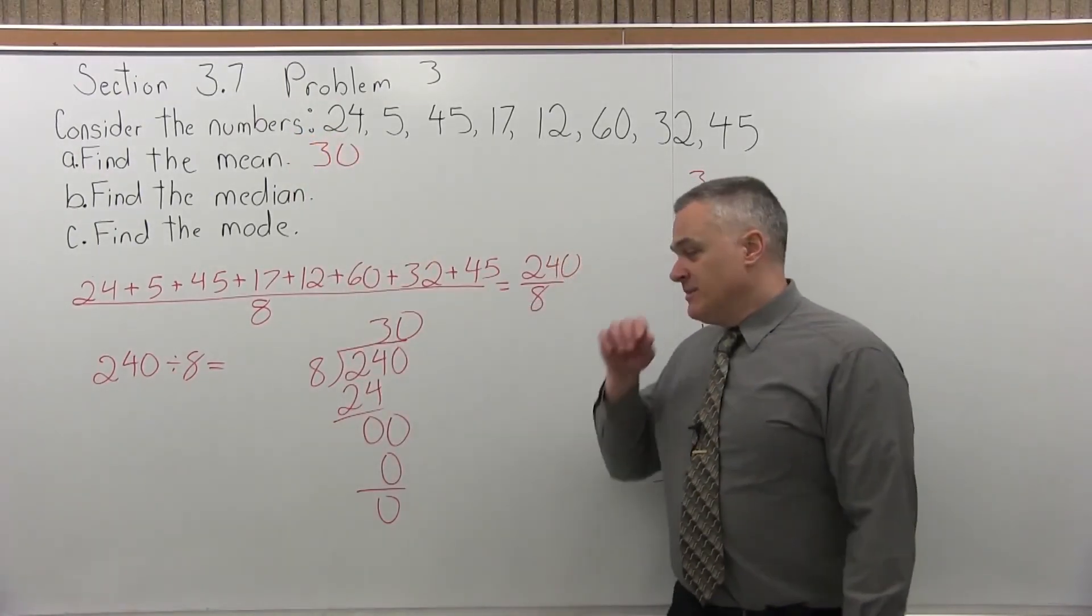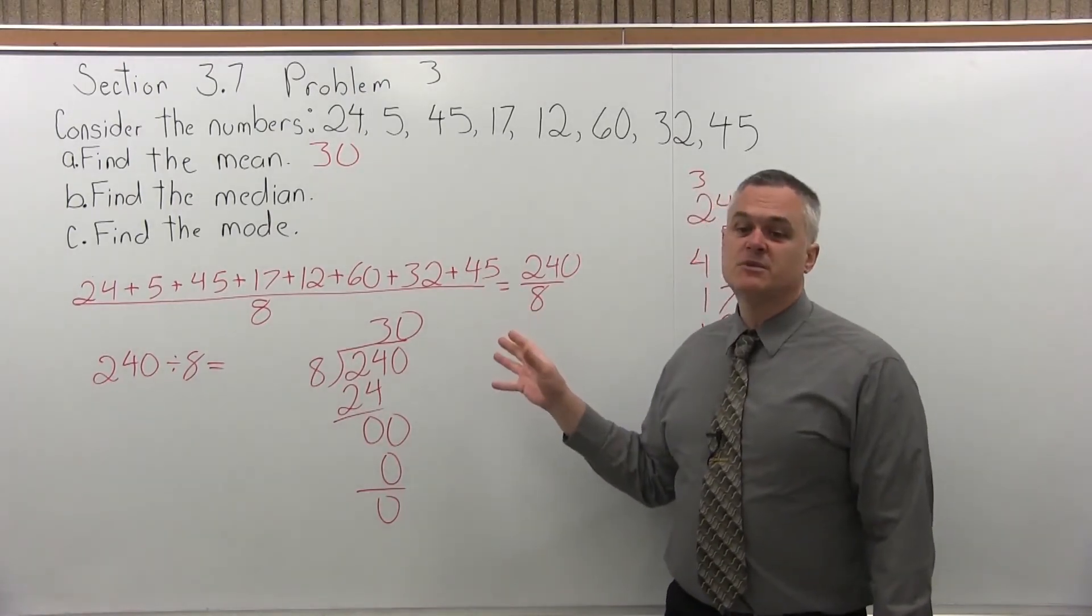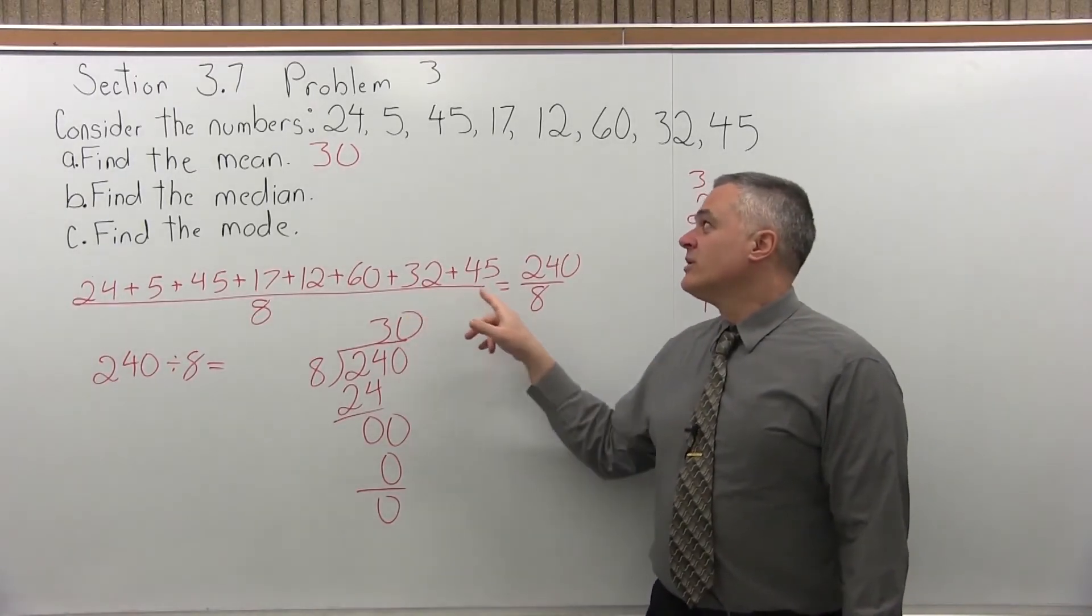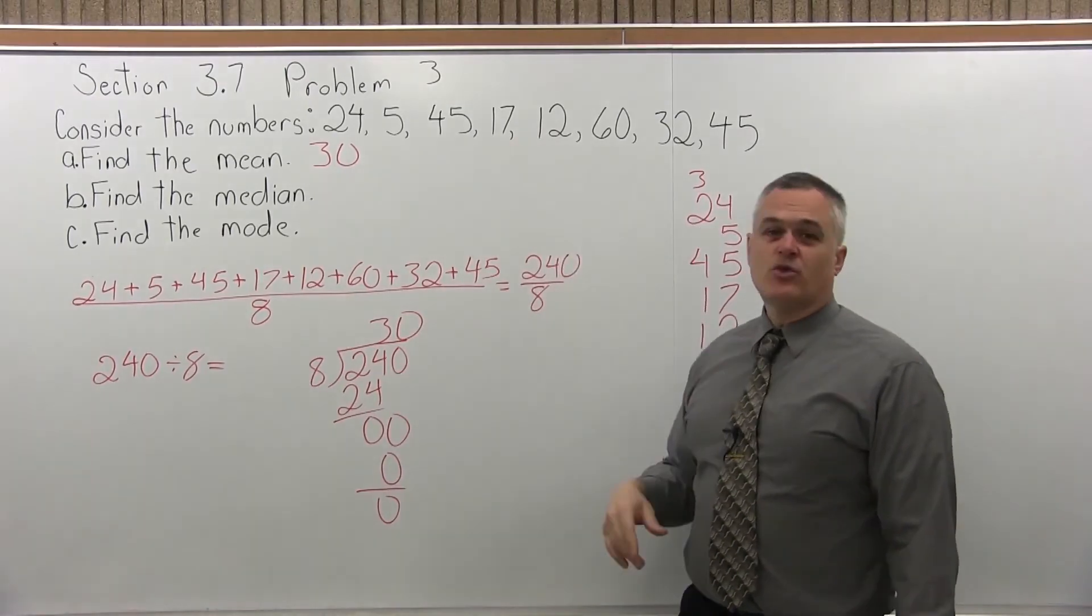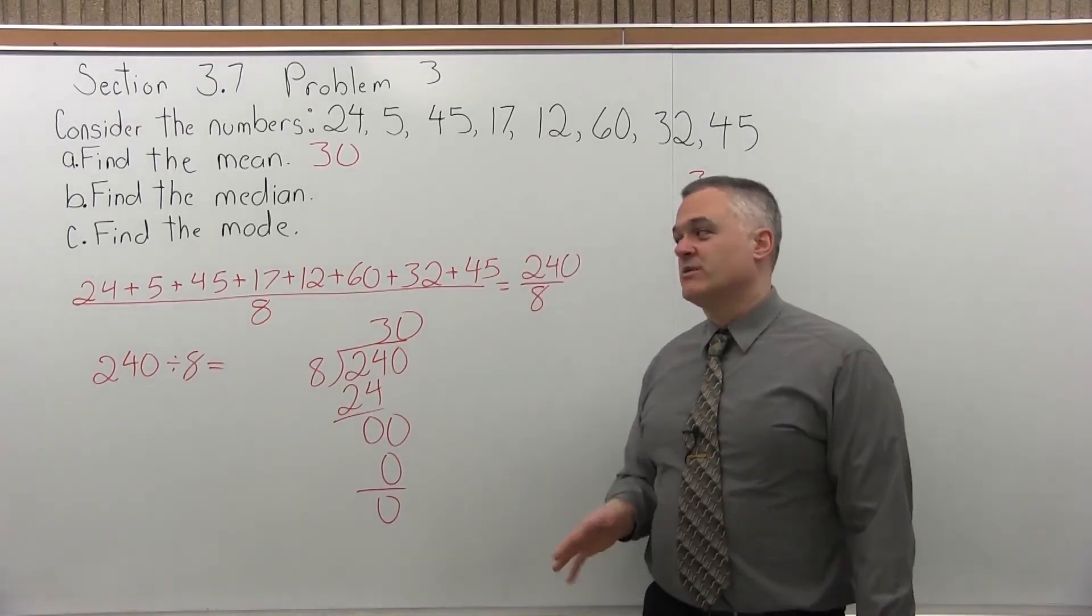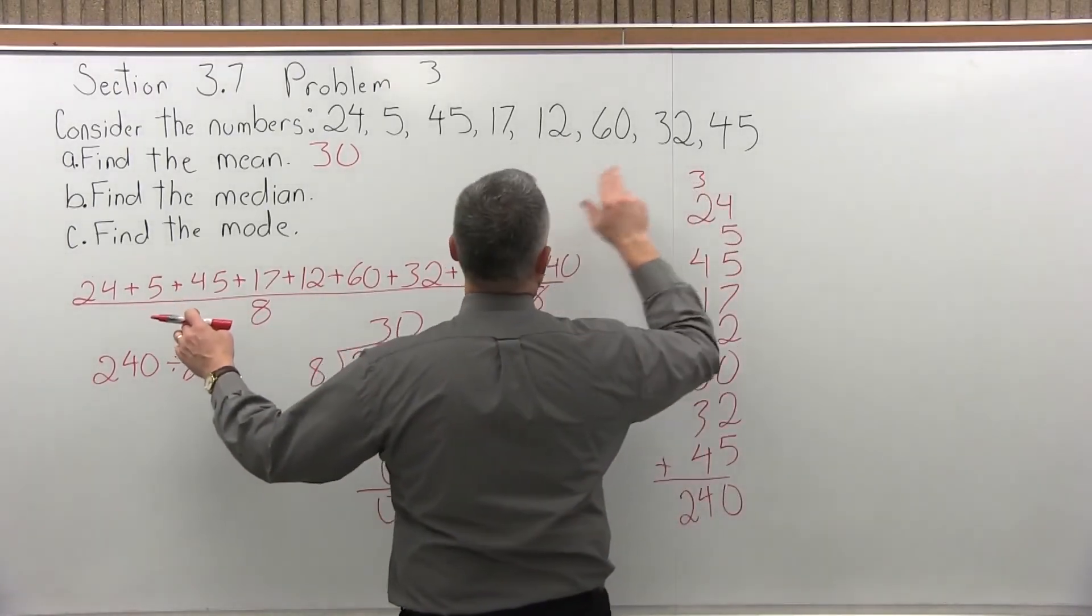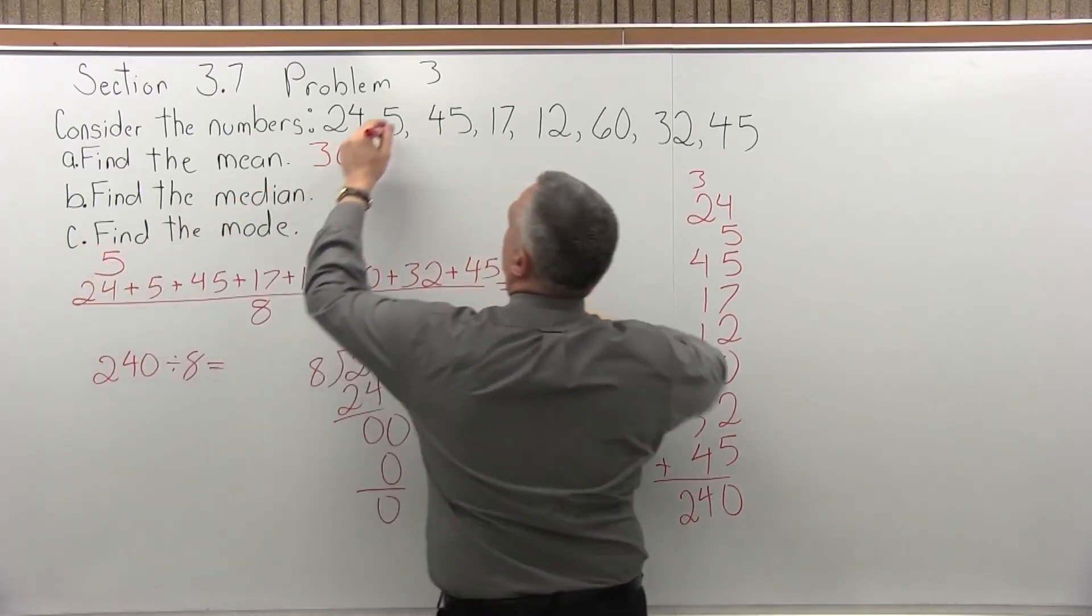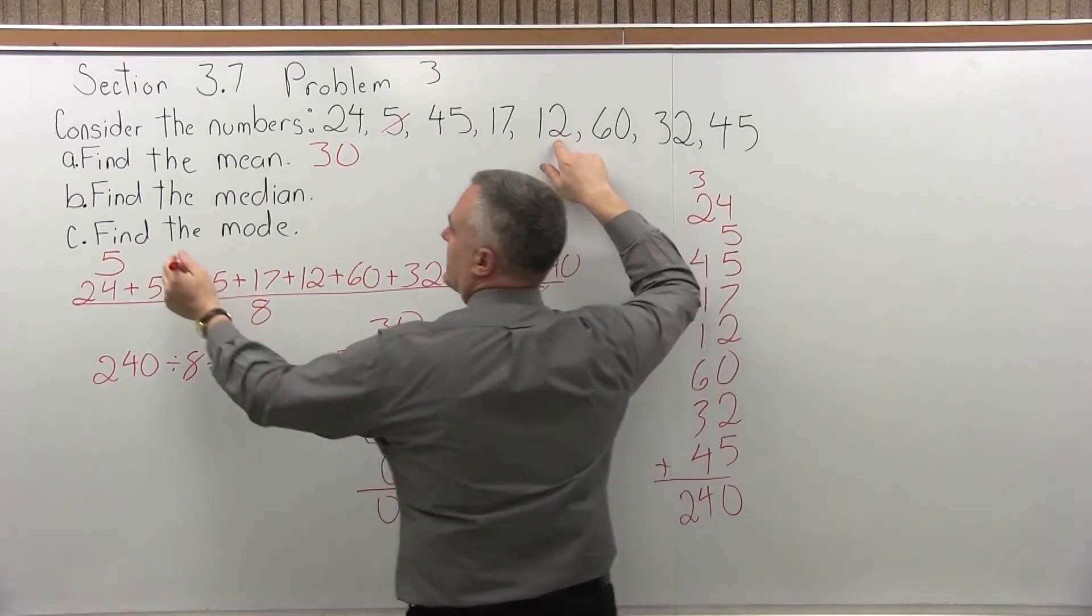Next, let's find the median. So the median is the middle number in the list once the list has been put in order. Now, notice this list is not in order now. The middle is somewhere around the 17 or the 12, and you can see those are some of the smaller numbers. So we have to put it in order. And I think I can fit it up above this list. So as I look through, definitely the smallest is 5. Once I use it, I'll cross it off. 12 seems to be next.